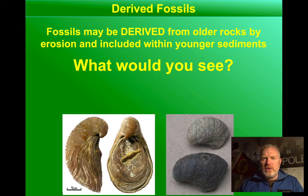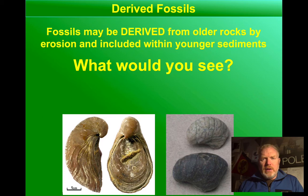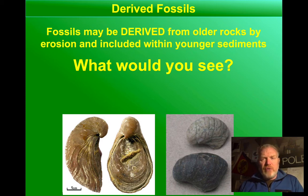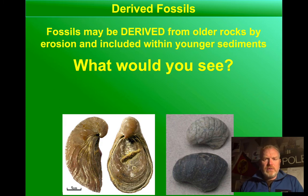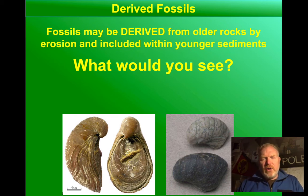Now, there are some things we need to watch out for within a fossil assemblage. This includes the idea of what we call a derived fossil. A derived fossil is one that is actually derived from older rocks — so it's eroded out of an older rock, transported as a clast, and then deposited with younger sediments. What would that look like? How would you recognise a fossil within an assemblage that's derived?